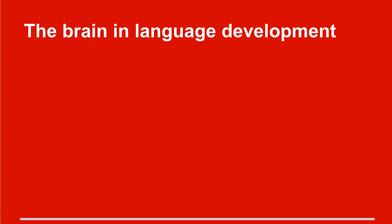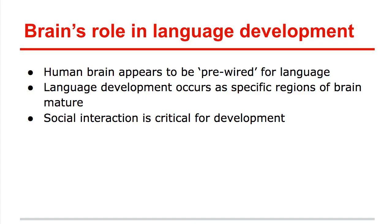A lot of what we're going to talk about as we begin is the role of the brain. The brain appears to be pre-wired for language — you come into the world with a kind of road map already set up for what it means to be a literate individual. There's also an understanding that language development occurs as regions of the brain mature. As you cognitively develop, you will also develop language skills and competencies — that makes sense.